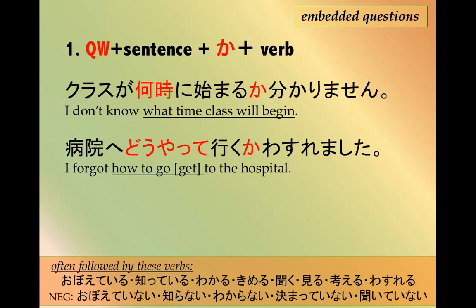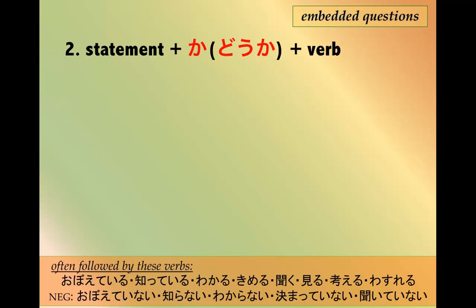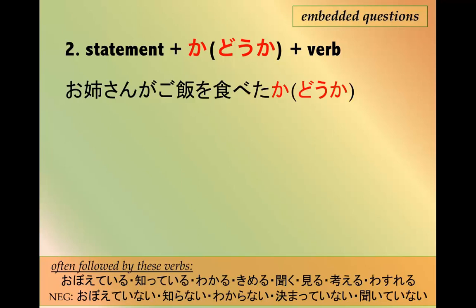The second pattern is: statement + か + verb, or statement + かどうか + verb — meaning 'whether or not something.' For example: おねえさんがごはんを食べたかどうか知ってますか — 'Do you know whether older sister has eaten or not?' And: 早く帰りたいかどうか考えてます — 'I'm thinking about whether I want to go home early or not.' Either か or かどうか is fine.